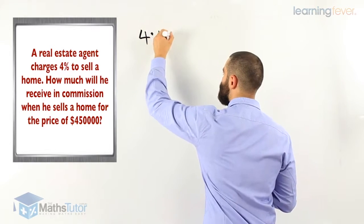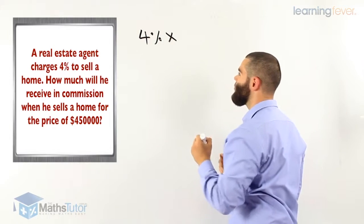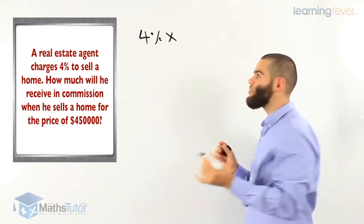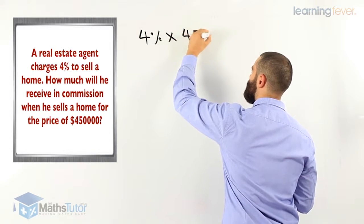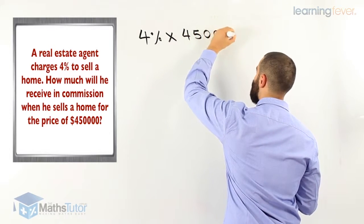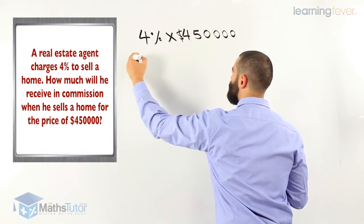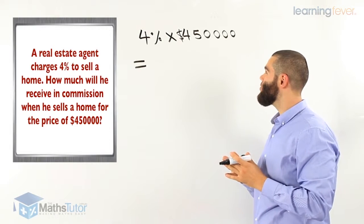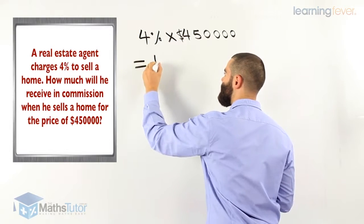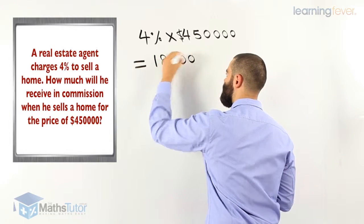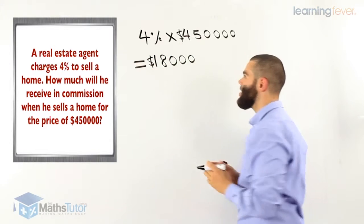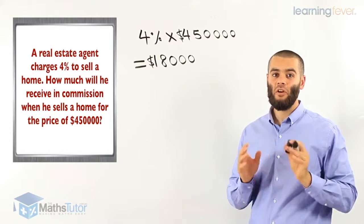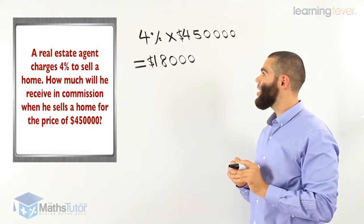4% of the home value is 4% times the home value. 4% times $450,000 equals $18,000. So the commission, the payment that this real estate agent is going to get is $18,000.